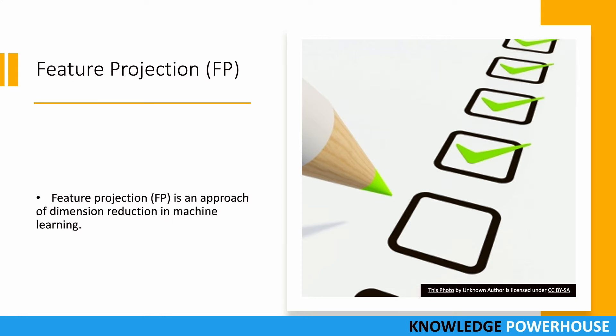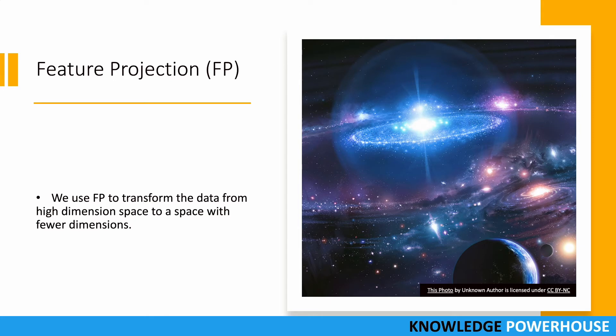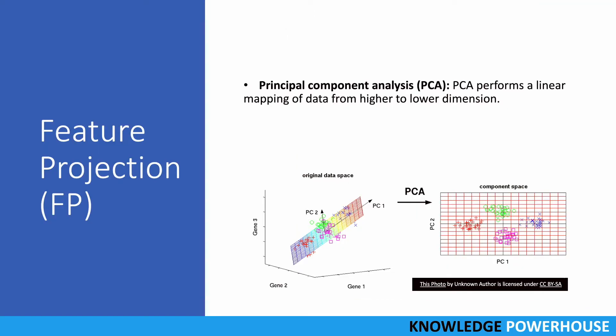There are various techniques of doing so. What we do in feature projection is we use some kind of mechanism to transform the data from high dimension space to a space with fewer dimensions, right? From high dimension we go to fewer dimension - let's say from 3D to 2D, 4D to 3D, that kind of thing.